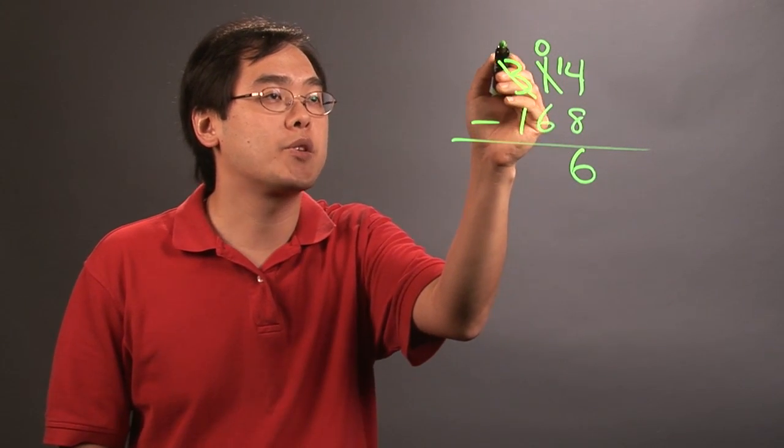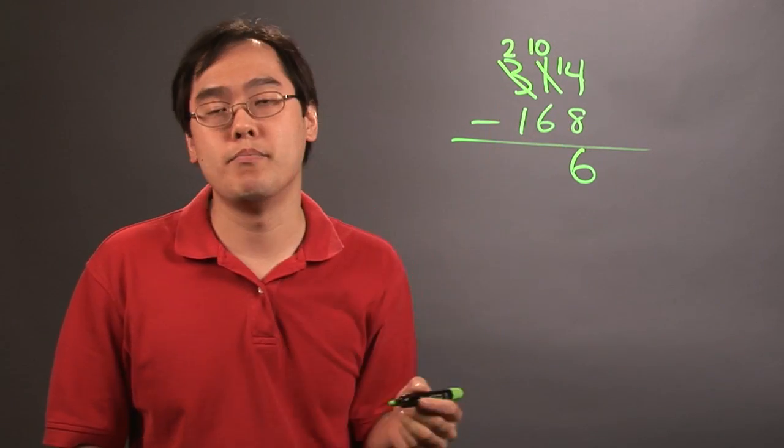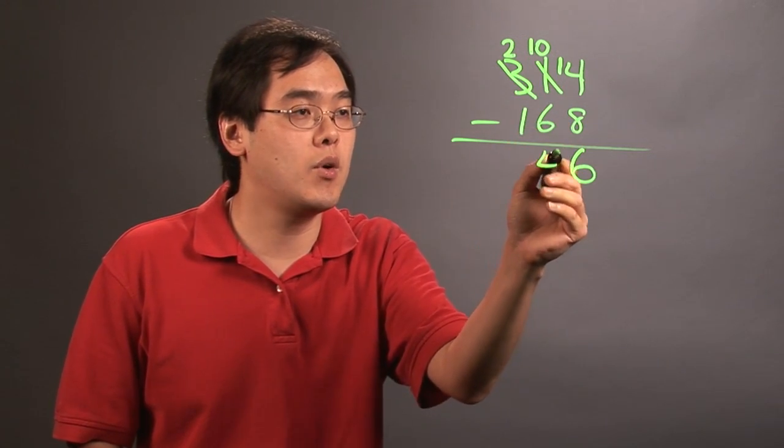So 3 is going to become a 2. And then the 0 is going to become a 10 because it borrowed 10 units from the previous digit. So 10 minus 6 is going to give you 4.